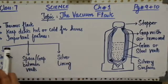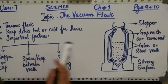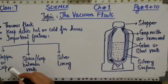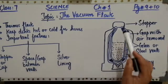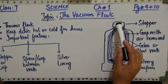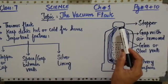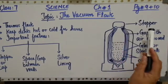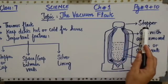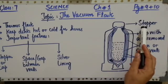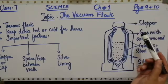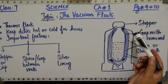What are the important features of this thermos flask? First of all, you can see the stopper or cap. This portion of the thermos flask is called the stopper. What is the purpose of this stopper? It actually minimizes or reduces the heat loss which occurs by convection and conduction.